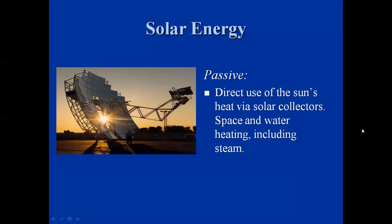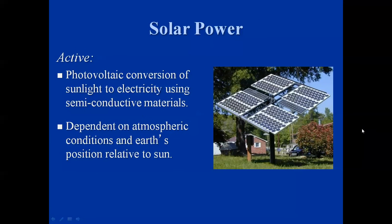Others — you'd probably recognize the difference — are the photovoltaic ones that produce power. This brings us to the active part: the photovoltaic conversion of sunlight to electricity using semi-conductive materials. It's dependent on atmospheric conditions and the Earth's position relative to the sun. Off to the right you can see a small-scale photovoltaic array. They're used more and more for traffic signs, communication systems, pipeline companies, and any type of long-distance lines or cables — signals are transmitted and power comes from photovoltaic cells.